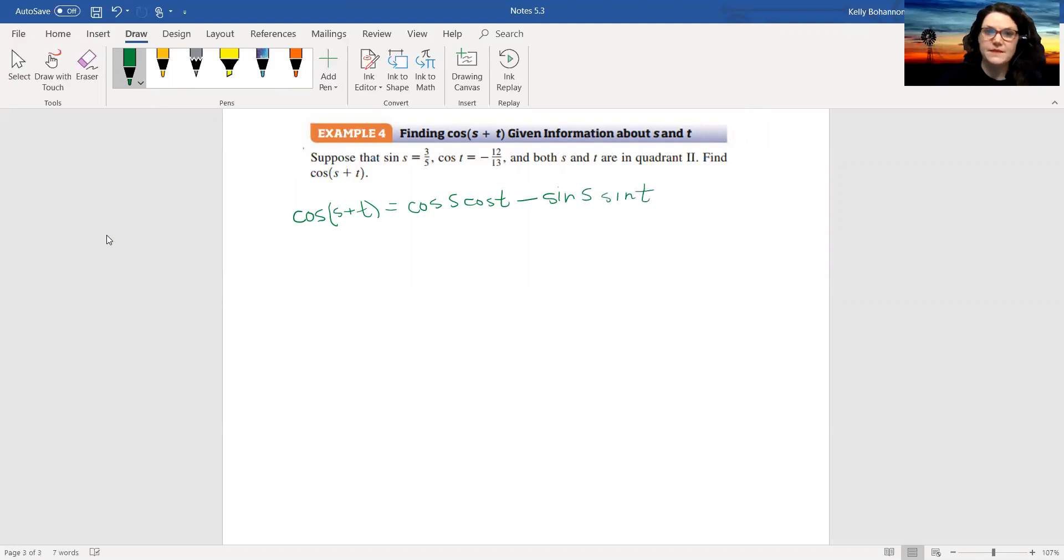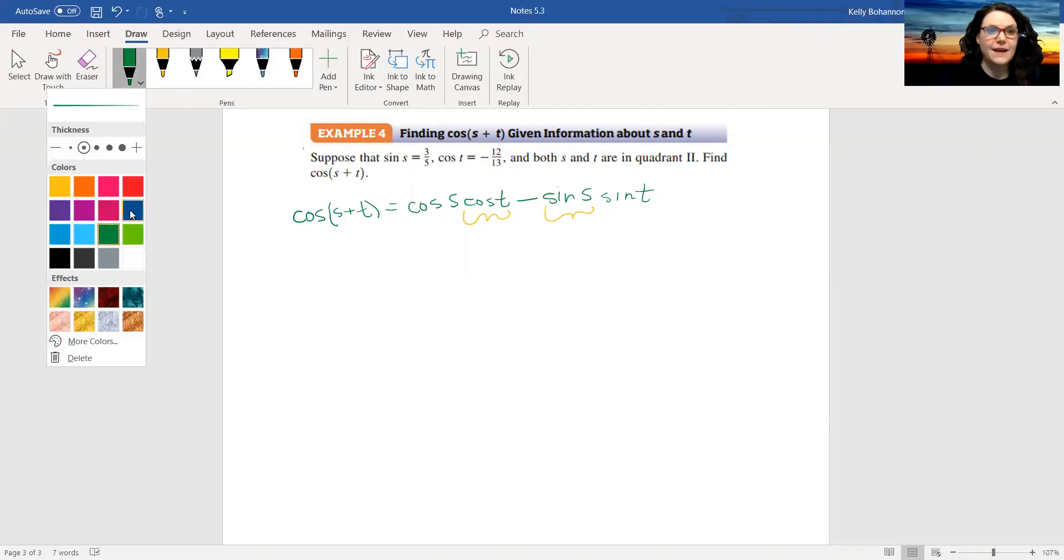Now the problem is I know sine s, so I know this piece, and I know cosine t, so I know this piece. I have to figure out cosine s and sine t, but I can do that just like we did way back at the beginning of the semester.